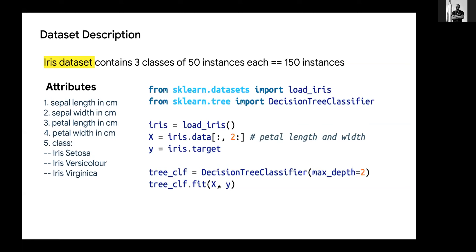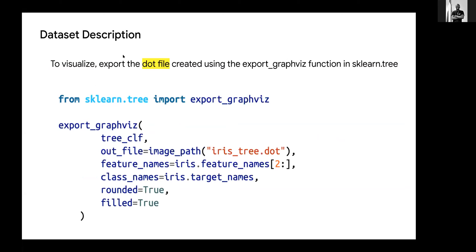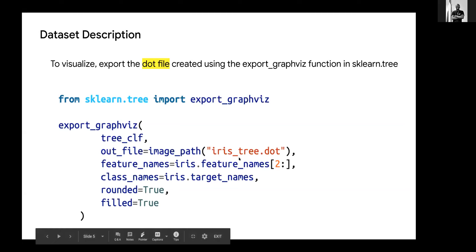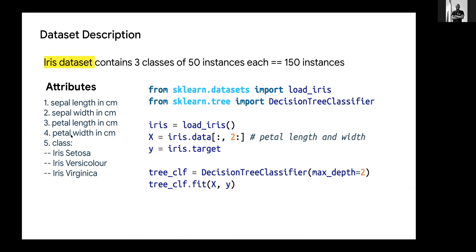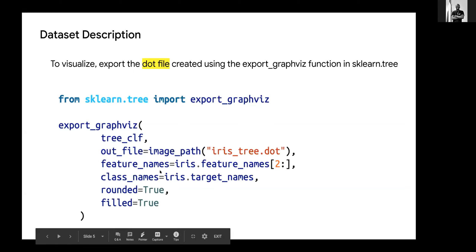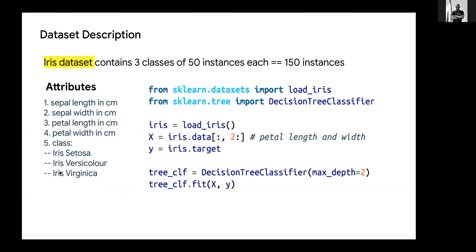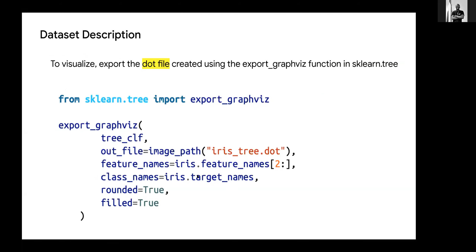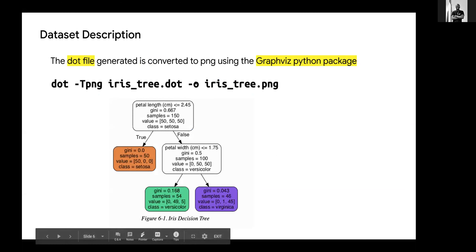Going to the next screen: after fitting, we had to visualize the tree. To do that, we export the file using a function in the sklearn tree class. Remember we are making use of just two features — petal length and petal width. This is the dot file that has been exported. We call the target names for the three classes, and when we do that, this is what we get to generate the dot file.